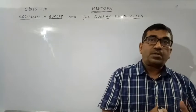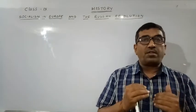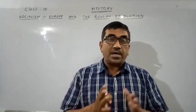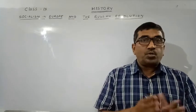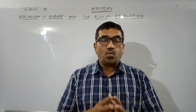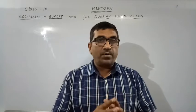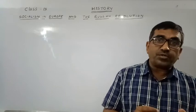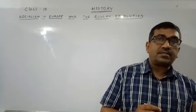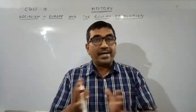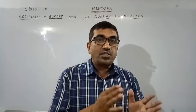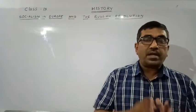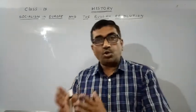The 1905 revolution was the base for the 1917 revolution. In 1917, two revolutions took place — one in February and one in October, according to the Julian calendar. According to the Gregorian calendar, these would be March and November, but they are famously known as the February Revolution and the October Revolution.